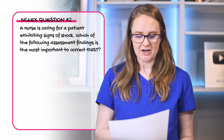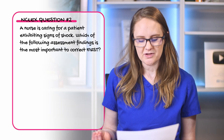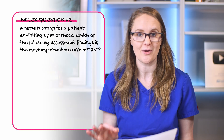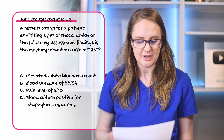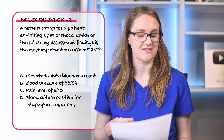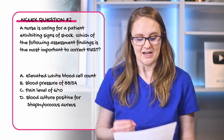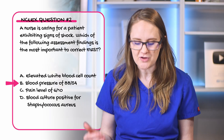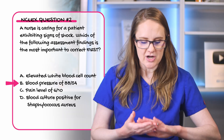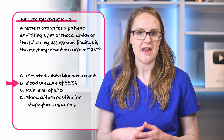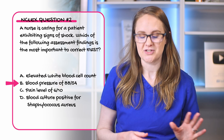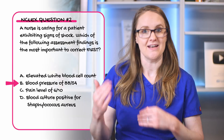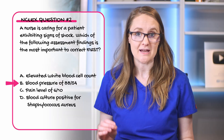Question number two: a nurse is caring for a patient exhibiting signs of shock. Which of the following assessment findings is the most important to correct first? A — elevated white blood cell count; B — blood pressure of 88 over 54; C — a pain level of 6 out of 10; or D — blood cultures positive for Staphylococcus aureus? The correct answer is B — a blood pressure of 88 over 54, which is low and indicates a perfusion problem. The other answers don't pose an immediate threat to the patient's life like that blood pressure does, so this needs to be reversed immediately.